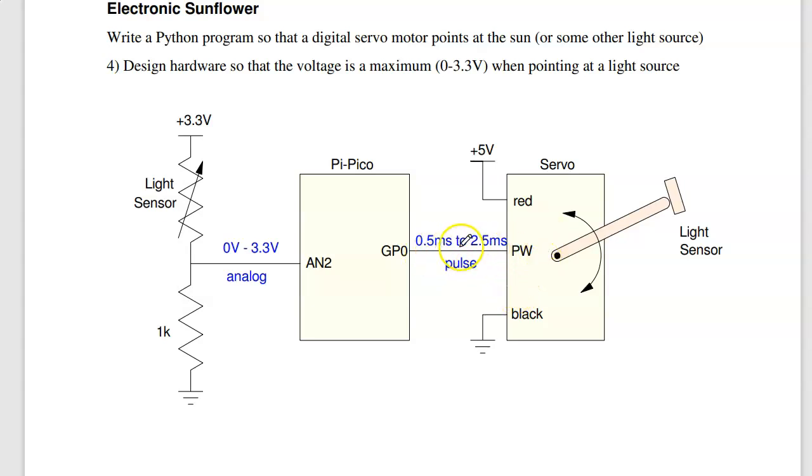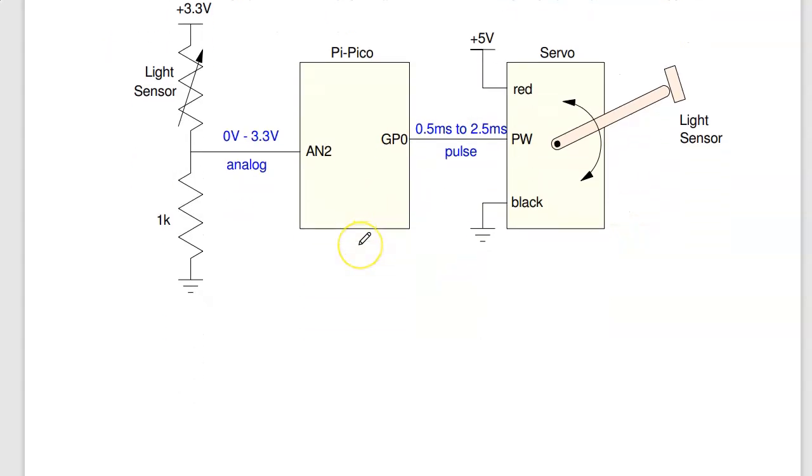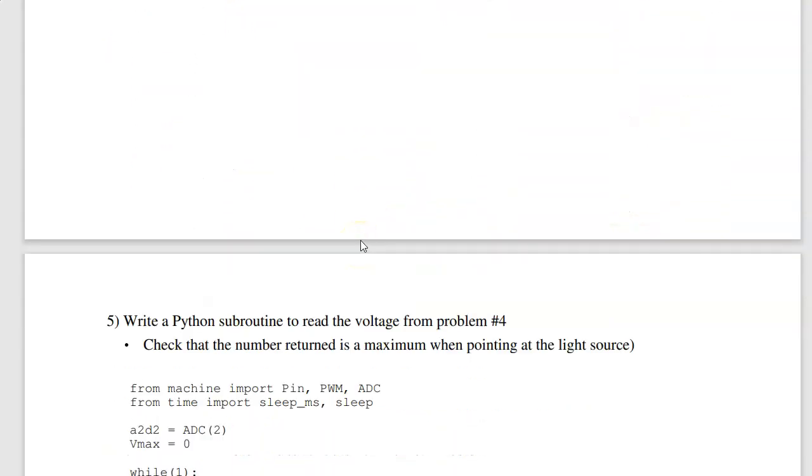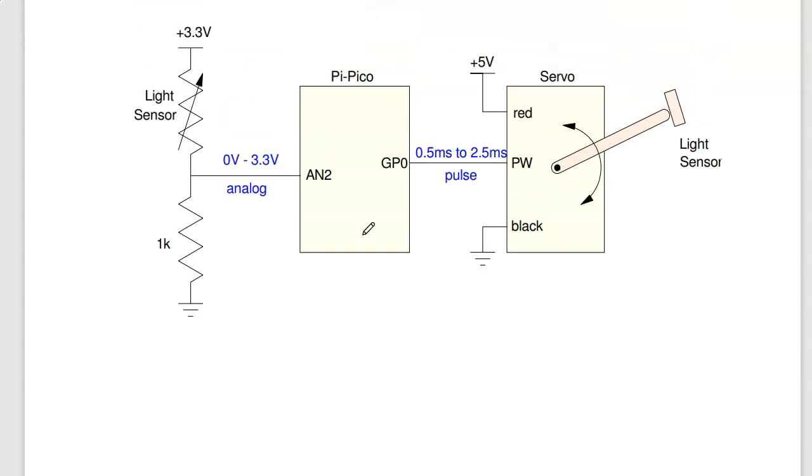It applies a pulse, 0.5 to 2.5 millisecond pulse. That controls the angle. The digital servo motor then swings back and forth. It tries to find out where the light is the brightest, meaning where is the voltage the highest. Once it finds it, go to that angle. Wait two seconds and repeat. That's kind of what I'm doing. In terms of hardware, that's the hardware connection.